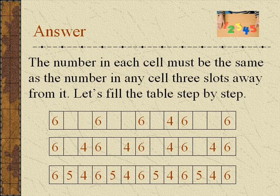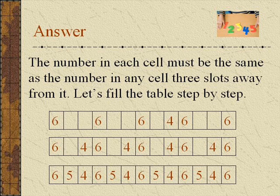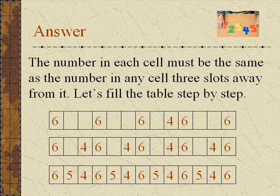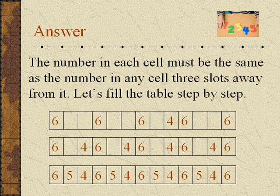Answer. Let's fill the table step by step. First fill in the sixes, then fill in the fours. Now, 6 plus 4 plus which number equals 15? Right, it's 5. So the remaining unknown numbers must be 5.